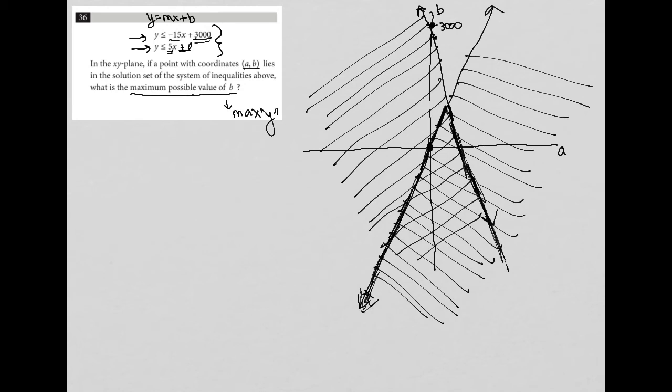So everything, and I'll use a different color, everything in here is the solution set for this system of inequalities. All right. So again, let's remind ourselves of what we're looking for. Well, we're looking for the maximum Y value that we can get. Well, the maximum Y value that's inside of the solution set would be actually right here, which is exactly where these two lines intersect.